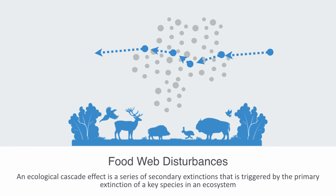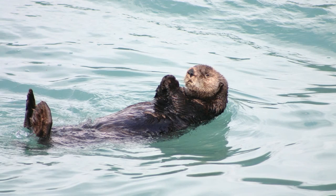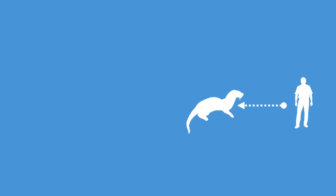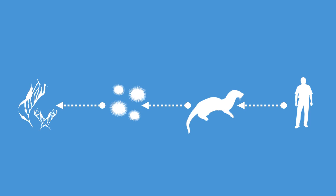Secondary extinctions are likely to occur when threatened species are dependent upon a few specific food sources or some mutualistic interaction. One example of a cascade effect caused by the loss of a top predator involves the sea otter. Before the 17th century, sea otters were hunted extensively for their pelts. Their decline caused a cascade effect through the kelp forest ecosystem along the Pacific coast of North America. One of the sea otter's primary food sources is the sea urchin; when sea otter populations declined, an ecological release of sea urchin populations occurred, and the sea urchins then over-exploited their main food source — kelp — creating ecological collapse in those areas.